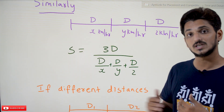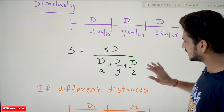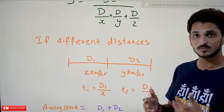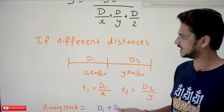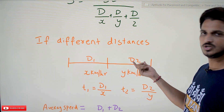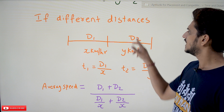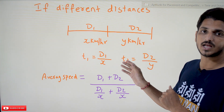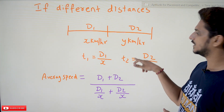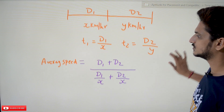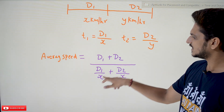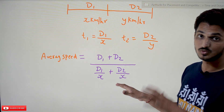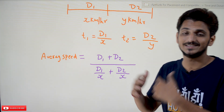Now, for the case of different distances: assume distance d1 at x km/h and distance d2 at y km/h. Total distance is d1 plus d2. Total time is d1/x plus d2/y — that is t1 plus t2. So average speed equals (d1 plus d2) divided by (d1/x plus d2/y). This is how we use the concept to solve problems involving different distances.